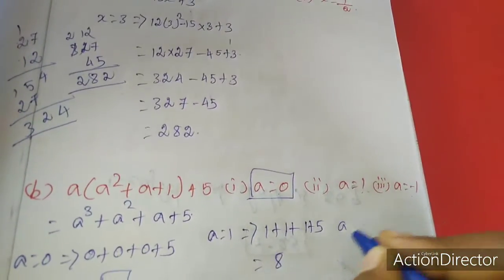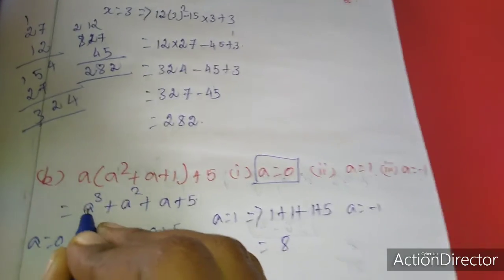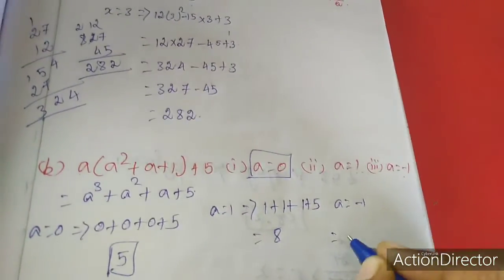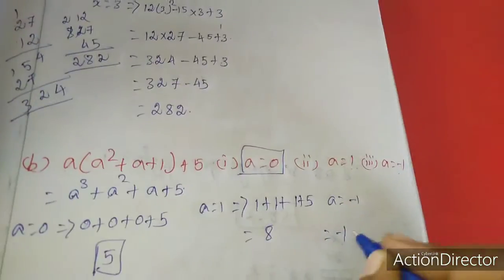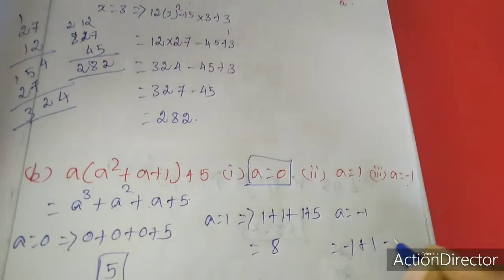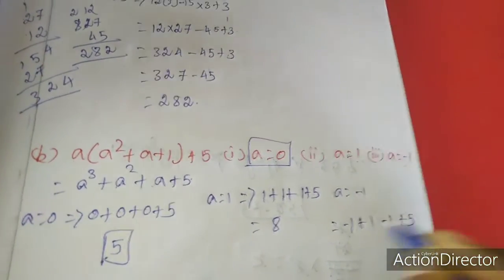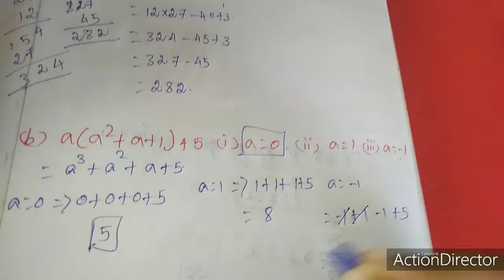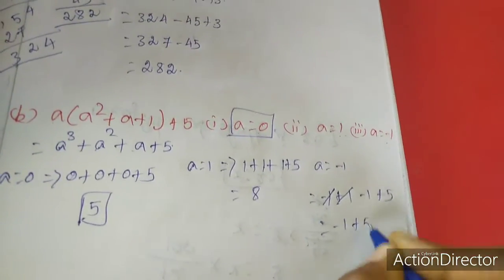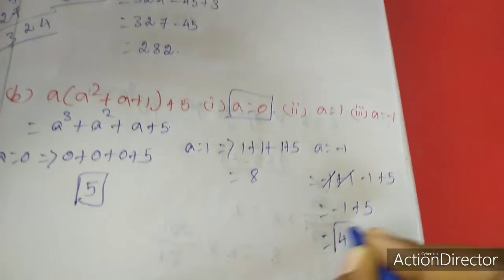Again minus 1, a equal to minus 1. Cube of minus 1 is minus 1, square of minus 1 is plus 1, then minus 1 plus 5. So minus 1 plus 1 cancel, minus 1 plus 5, subtracting gives 4.